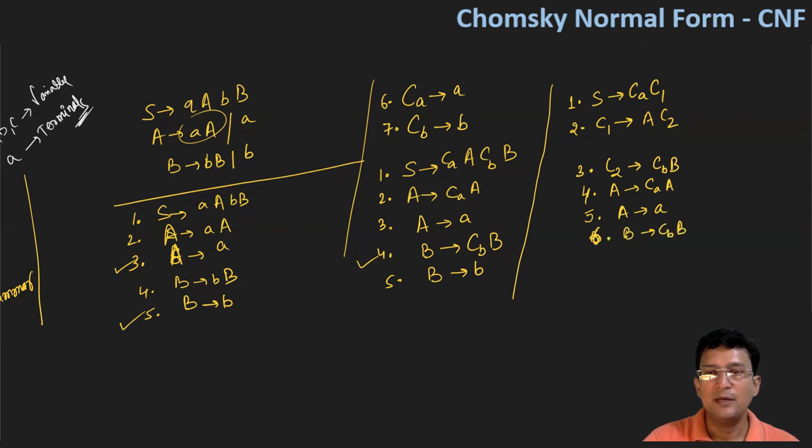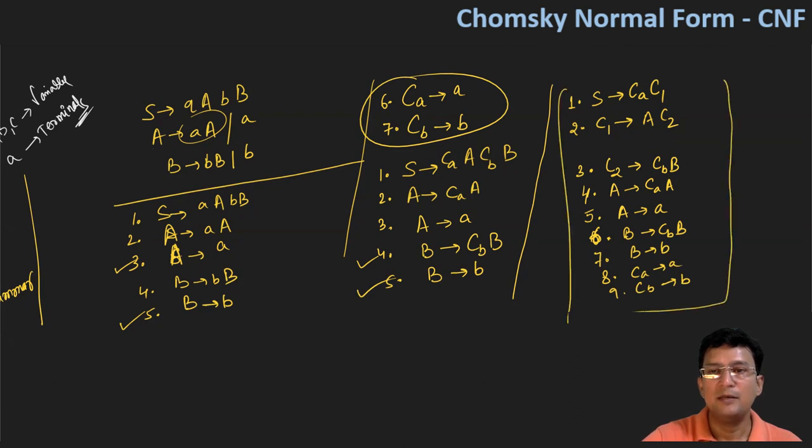So B produces CB and capital B. Then production number five is already in CNF, so we have renumbered it. It says that the numbering is seven, and that is B produces small b. And production numbers six and seven that we had taken in the beginning, we will keep them. So CA produces small a, and CB produces small b. So this way we have converted our grammar to Chomsky normal form.